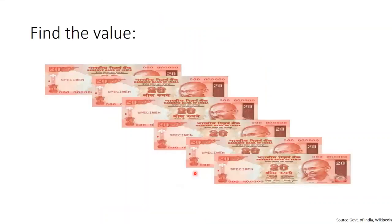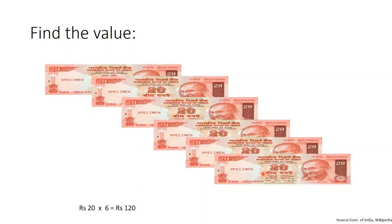Can you find the total value here? There are 1, 2, 3, 4, 5, 6 — six 20 rupee notes. Therefore, the total value is rupees 20 plus rupees 20 plus rupees 20, and so on 6 times, which is 6 into rupees 20. So the total value is rupees 120.